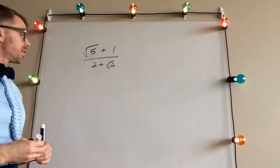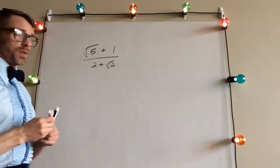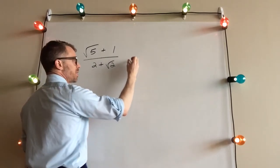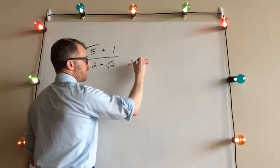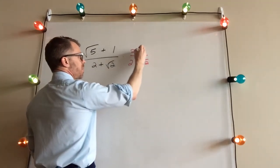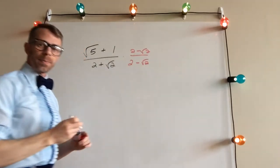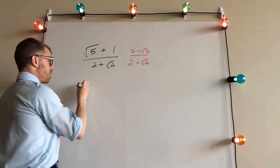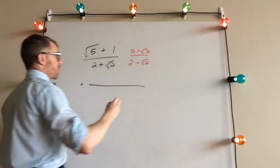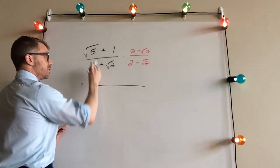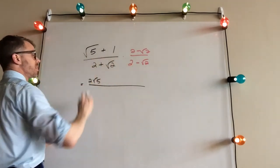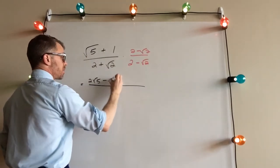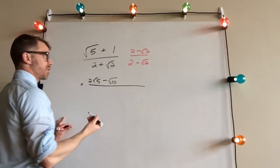Alright — radical on top, radical on the bottom. We need to get rid of the radical that's down low, so we're going to multiply the top and bottom by the conjugate of the denominator. Keep the number parts the same, change the symbol between, and make sure you multiply that to the top and bottom. Then we're going to FOIL across the top and FOIL across the bottom. FOILing across the top: First gives 2 times 2√5. Outer gives √5 times negative √2, which becomes negative √10. Inner gives 1 times 2, which is positive 2.